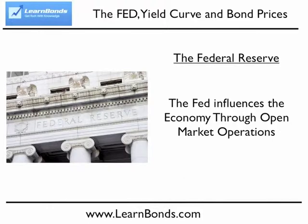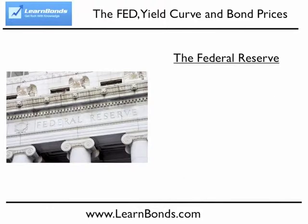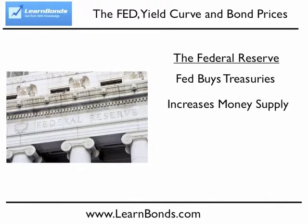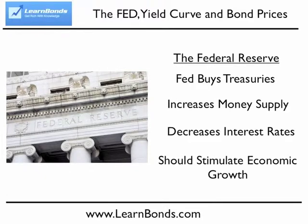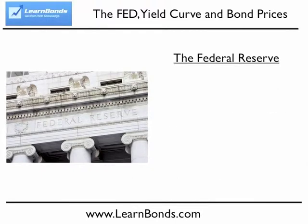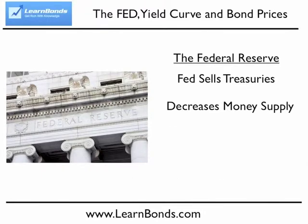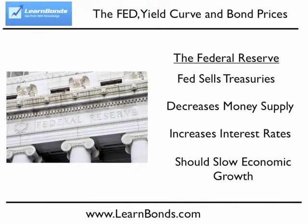When the Fed goes into the market and buys treasuries, they increase the money supply. This sends interest rates lower and should stimulate the economy. When the Fed sells treasuries, the money that they receive is taken out of circulation, reducing the money supply. This sends interest rates higher, which should slow economic growth.